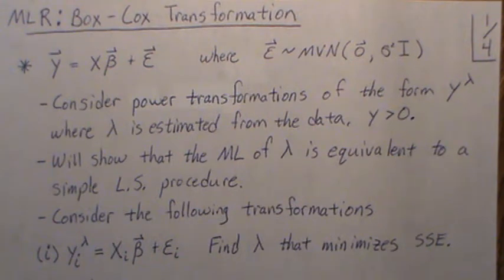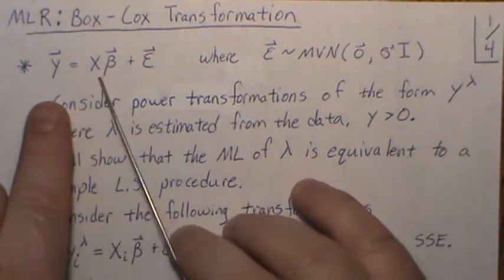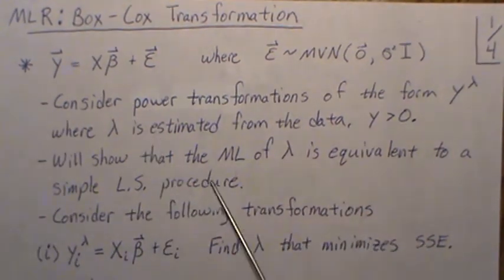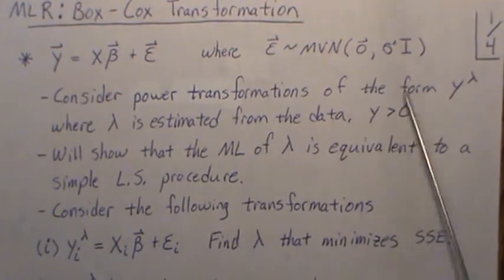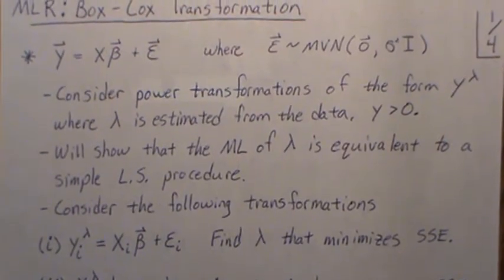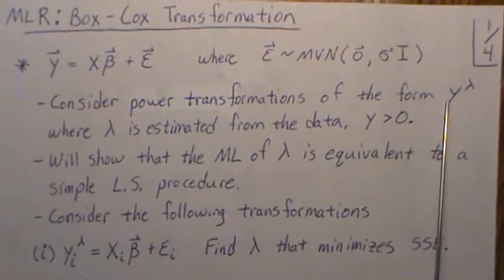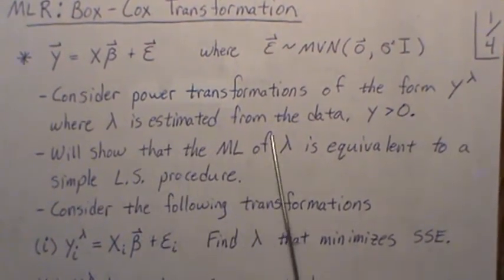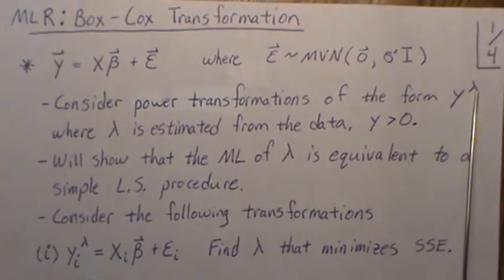Hello. In this video we're in the multiple linear regression setting and we're going to look at the Box-Cox transformation. So let's jump right in. This is the setting. We have a linear equation y equals x beta plus error, and we're going to assume that the errors are multivariate normal with mean zero and covariance matrix sigma squared I. Now we're going to consider transformations of the form y lambda, where lambda is estimated from the data. So this lambda is the Box-Cox transformation.